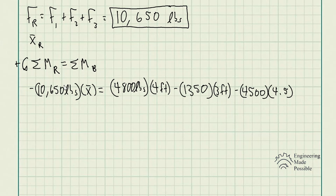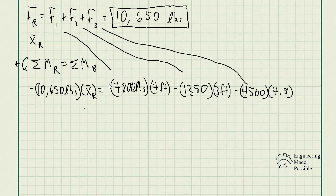The moment caused by the resultant force acts in the clockwise direction, so it is negative: −10,650 × x̄_R. This equals the sum of moments from F1, F2, and F3 with respect to B: 4800 × 4 ft − 1350 × 3 ft − 4500 × 4.5 ft. Solving algebraically gives x̄_R = 0.48 feet — the location of the resultant force from point B.